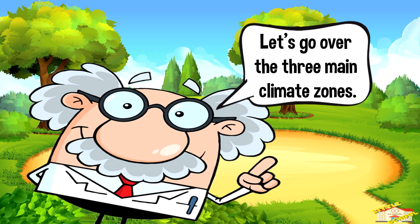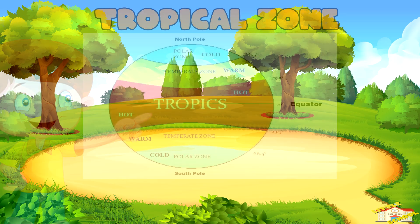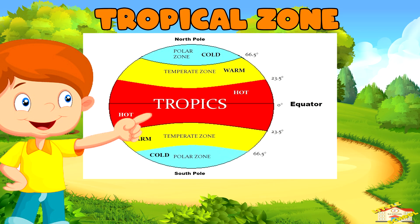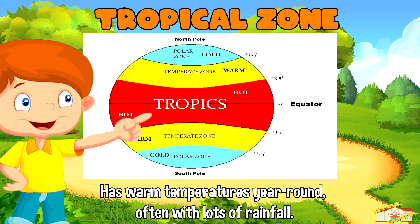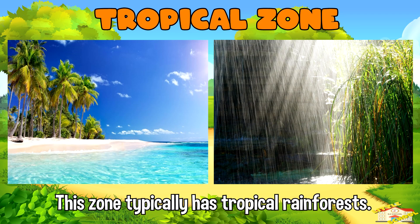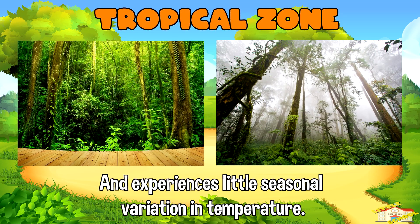Let's go over the three main climate zones. First, the tropical zone. This zone is located near the equator. The tropical zone has warm temperatures year-round, often with lots of rainfall. This zone typically has tropical rainforests like the Amazon and experiences little seasonal variation in temperature.